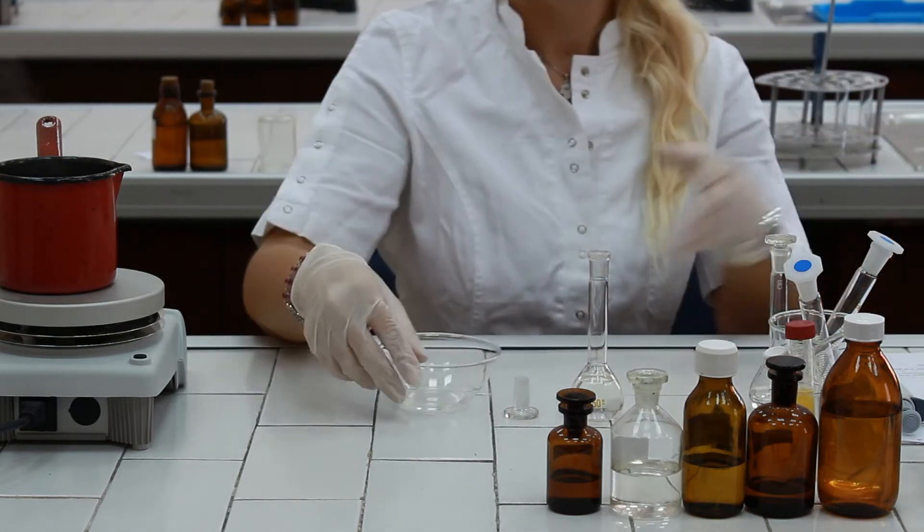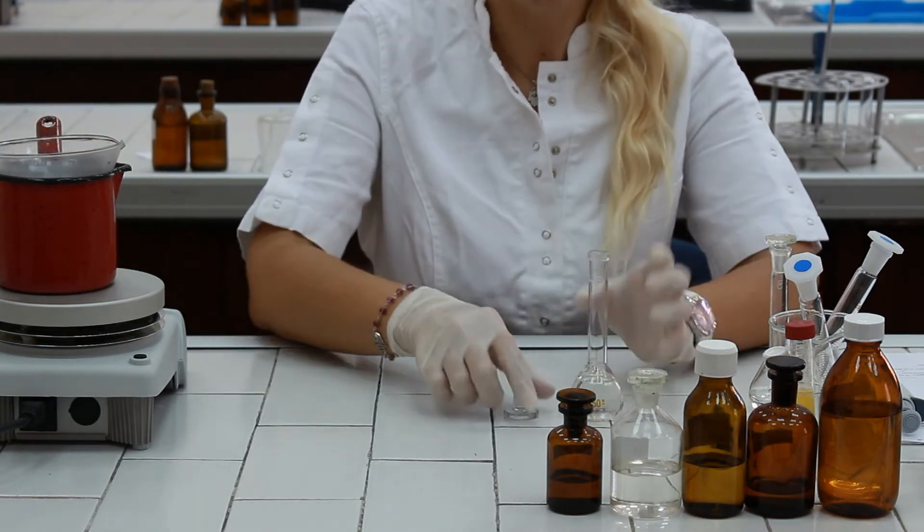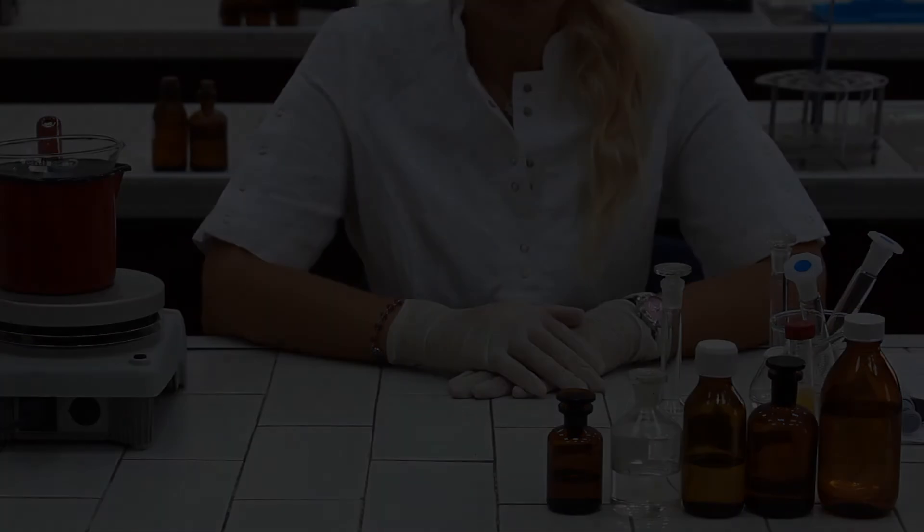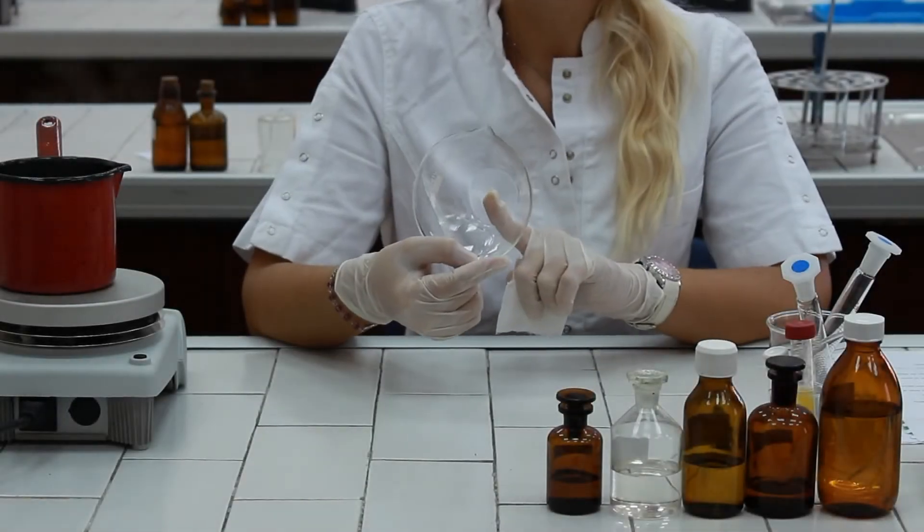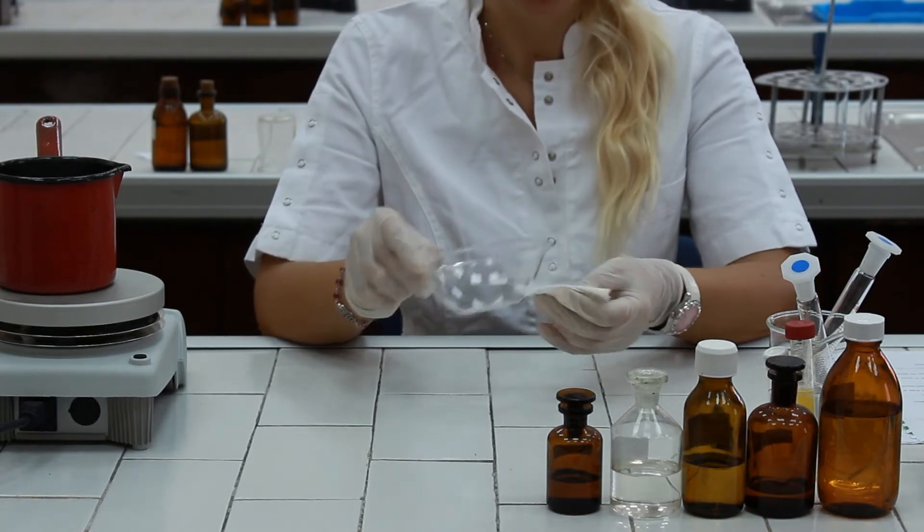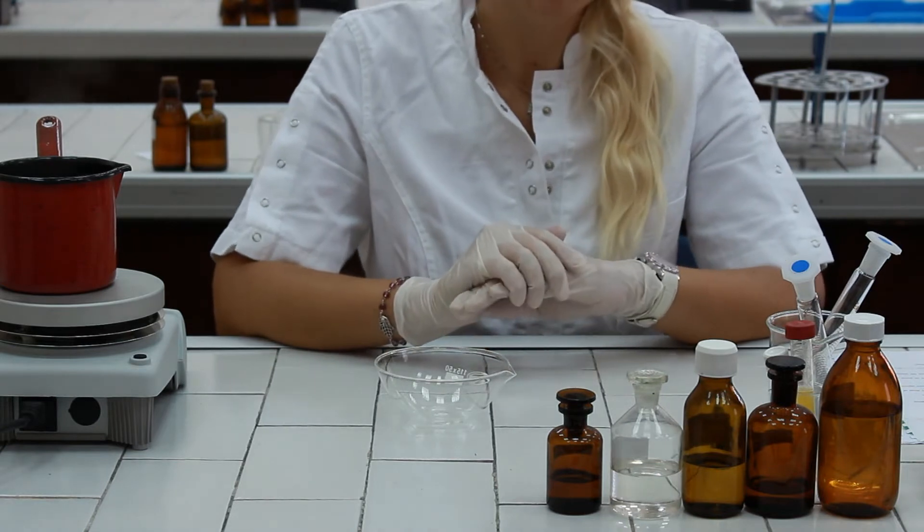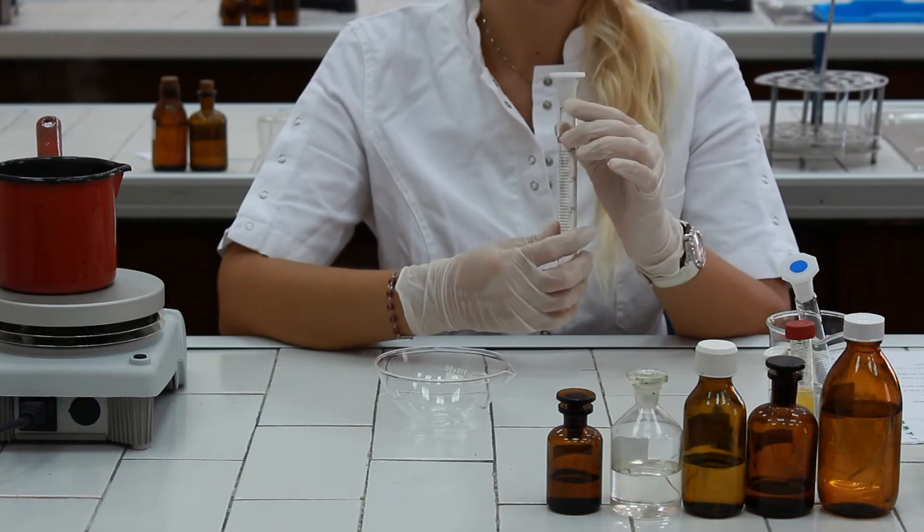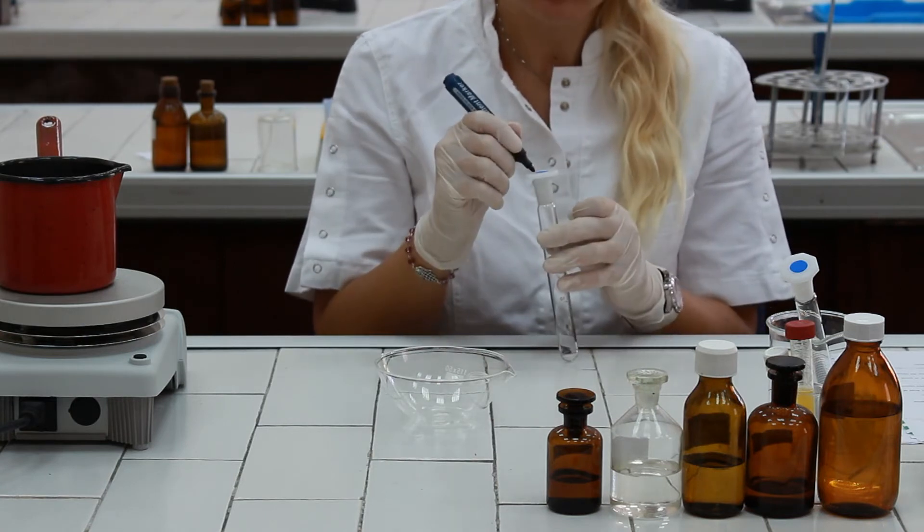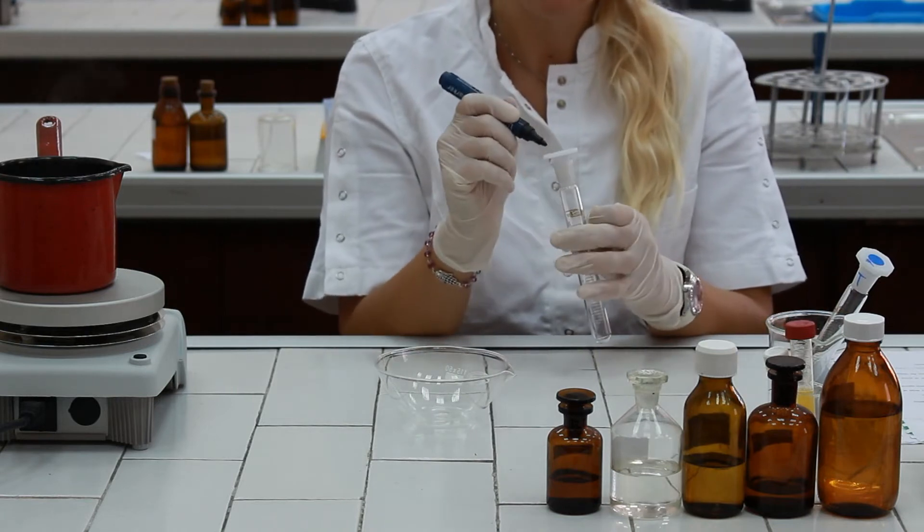Place the evaporating dish to the boiling water bath and leave until the complete volume of ether and ethanol mixture is evaporated. When the solvents are evaporated we should wipe thoroughly the outer sides of the dish in order to avoid excess water getting into our reactive system. Now we have to prepare two graduated cylinders. One cylinder we are going to mark with T as test and another one is going to be marked with S as standard.